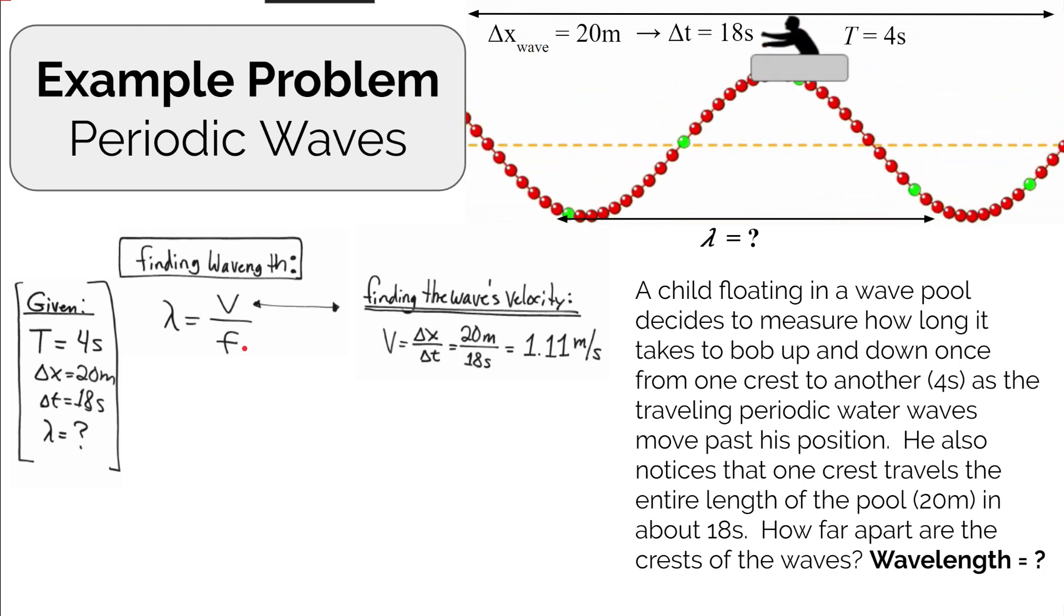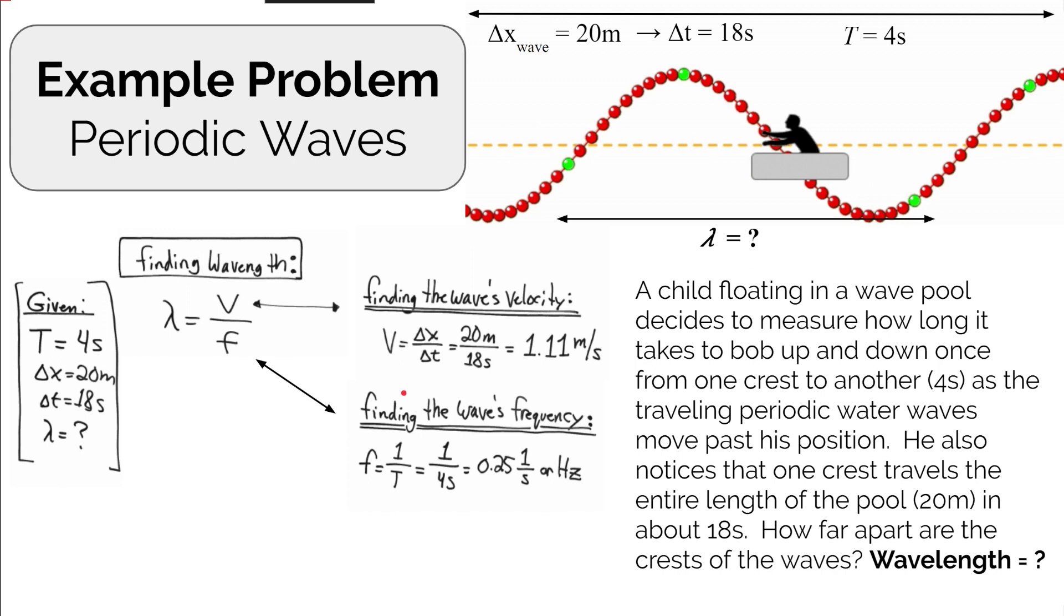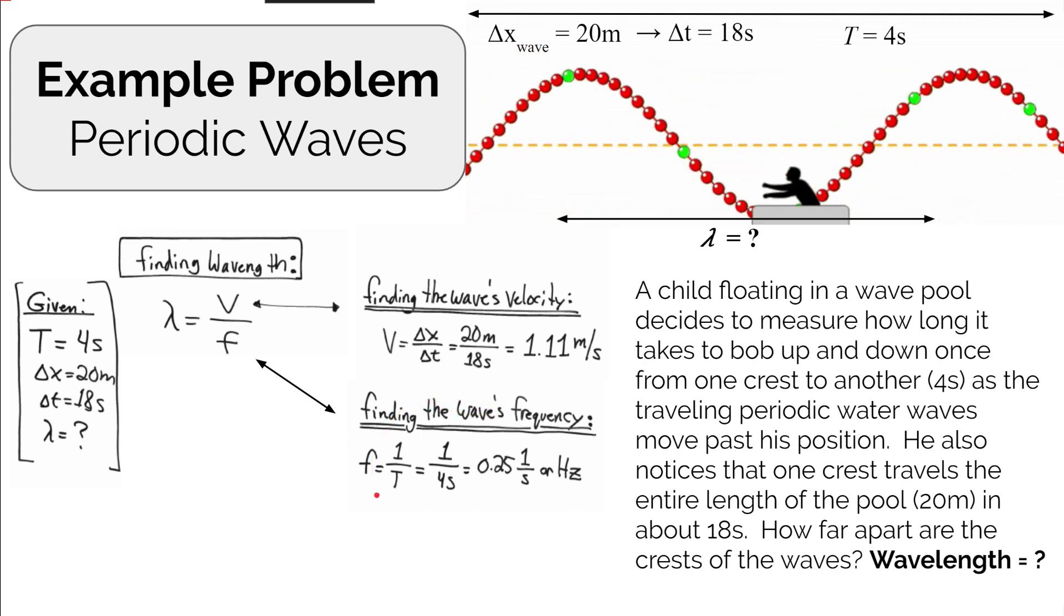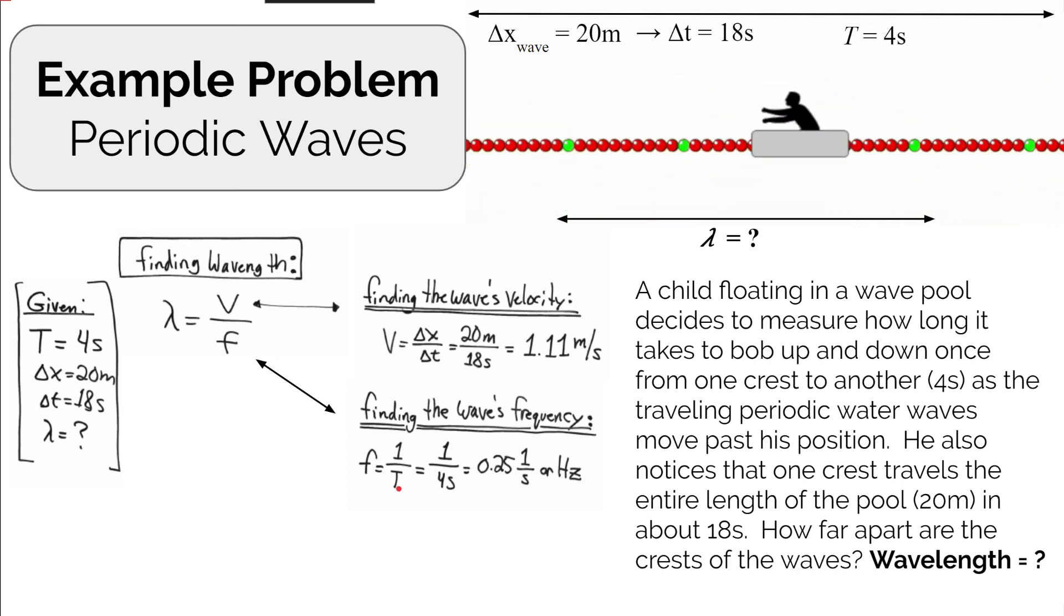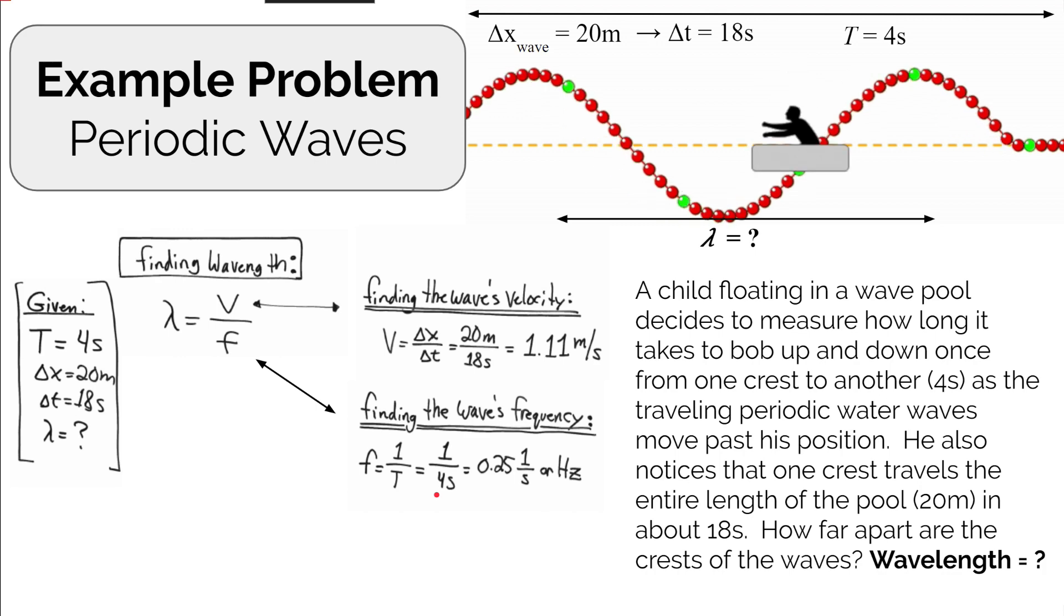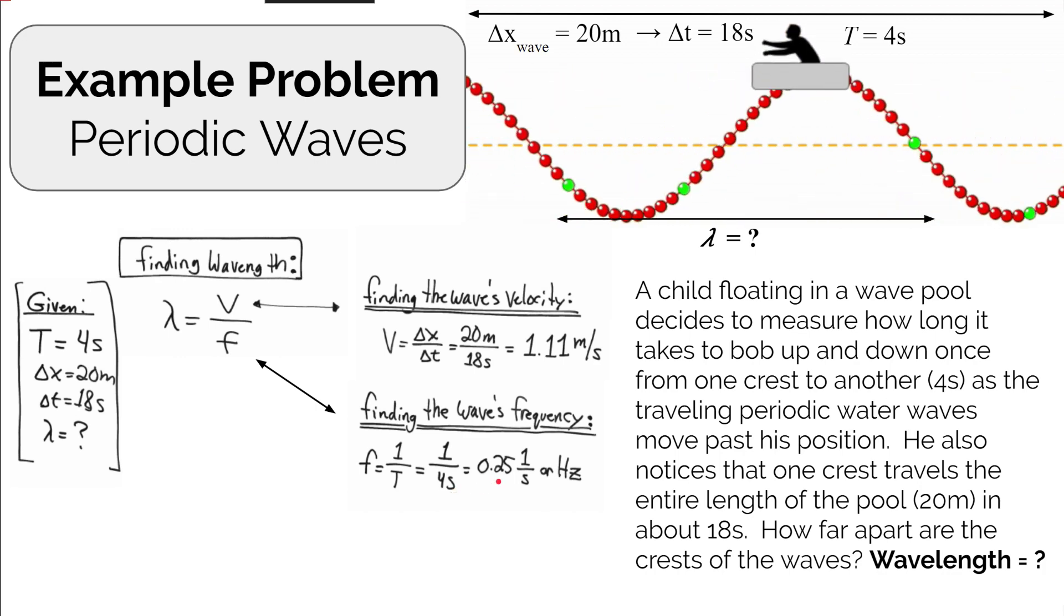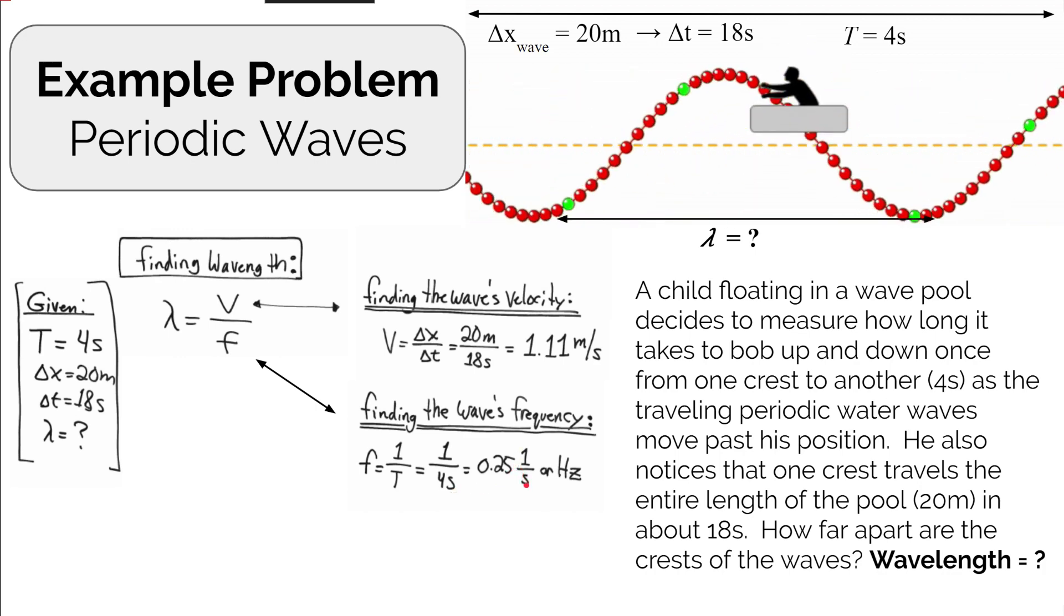Frequency and period are inverses of one another. If we're looking for the wave's frequency, frequency is one divided by the period, which is four seconds. We get 0.25 inverse seconds for the units.